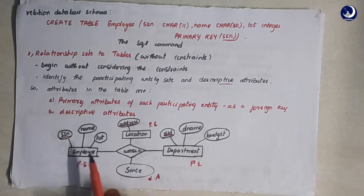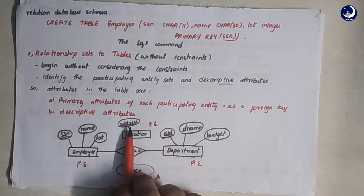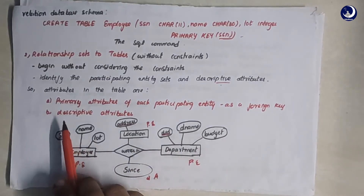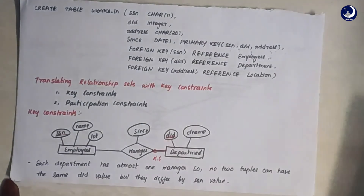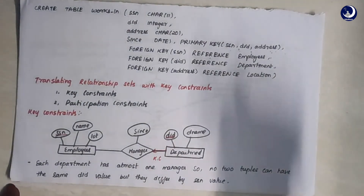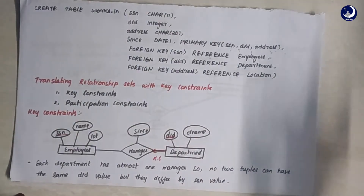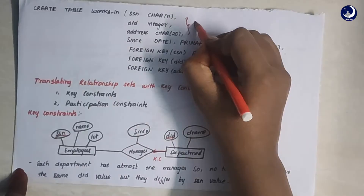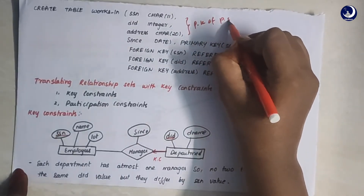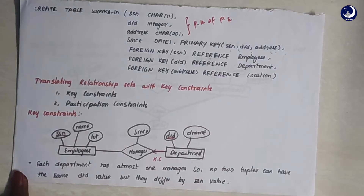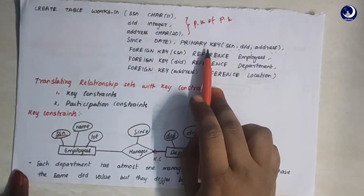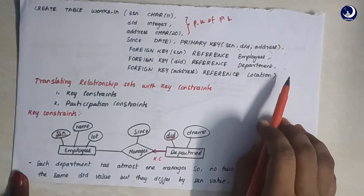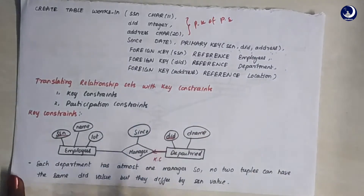In our final works-in table, the attributes are SSN, DID, and address — the primary keys of the participating entities — along with 'since' as the descriptive attribute. The database schema is: CREATE TABLE works_in (SSN, DID, address, since), where SSN, DID, and address together form the primary key, and they are also separately defined as foreign key constraints. This is how you transform a relationship set without considering the constraints.